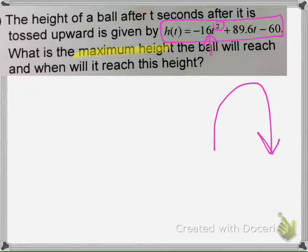When a ball is tossed up, it goes up and then comes back down, giving it that parabolic shape. The problem asks us to find the maximum height, which is right here at the vertex.